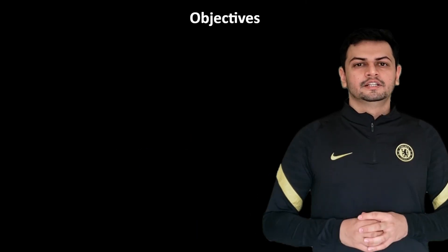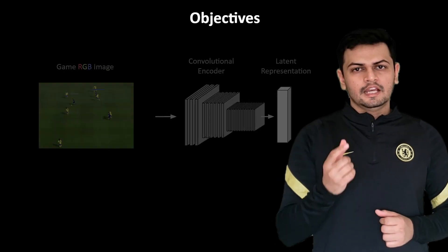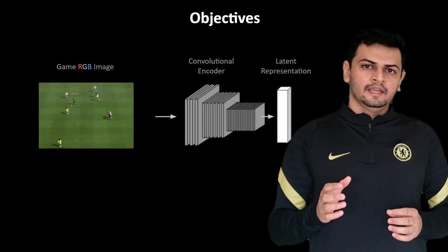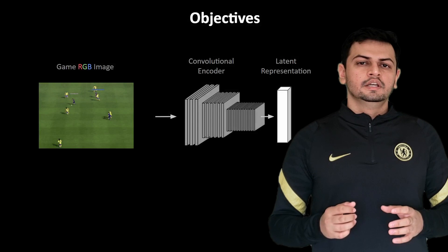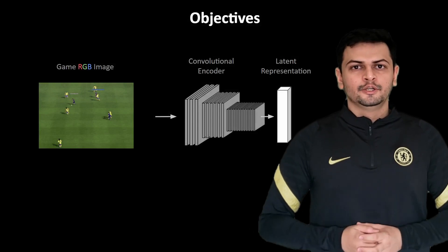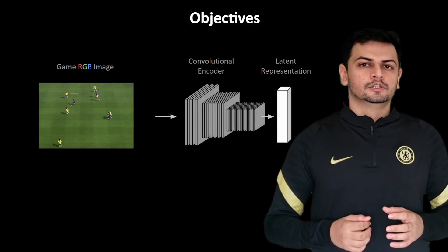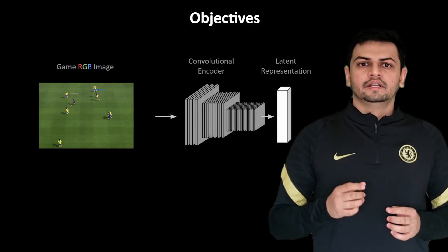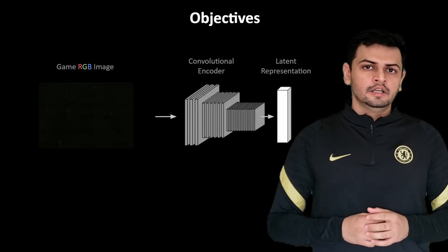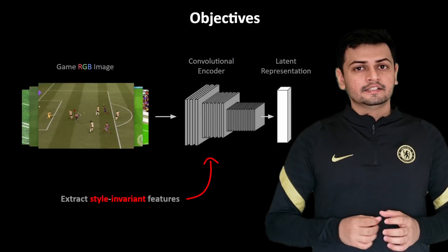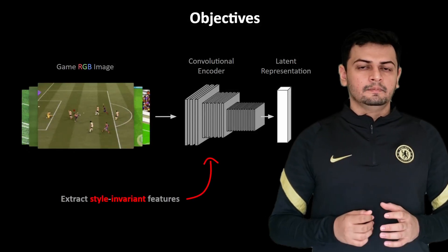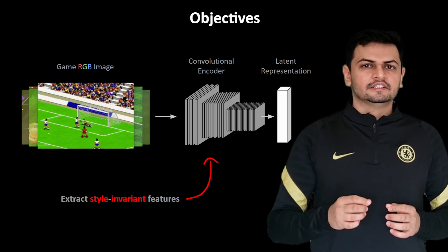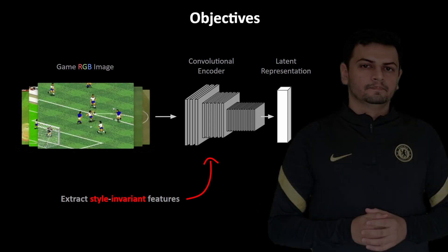Our main objective in this paper is to learn a latent representation of a game's RGB image using a convolutional neural network encoder. We want to ensure that the encoder is invariant to the graphical styling of the game while it is able to focus only on extracting the content of the game.